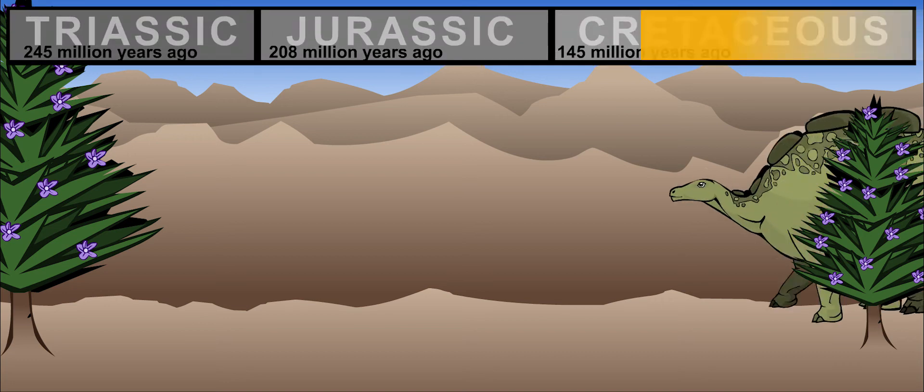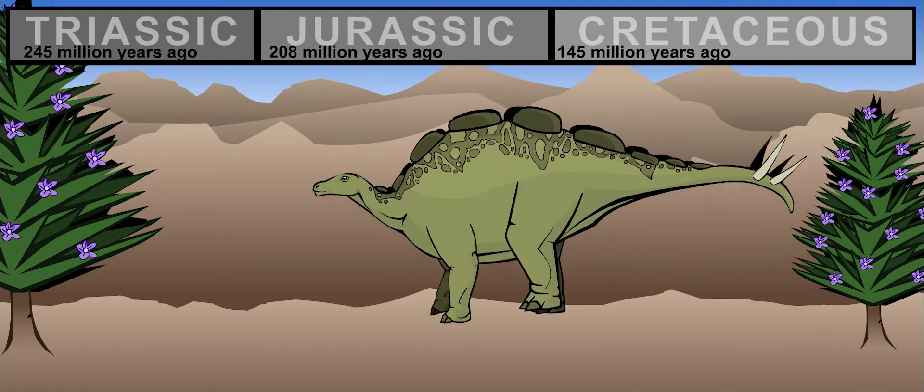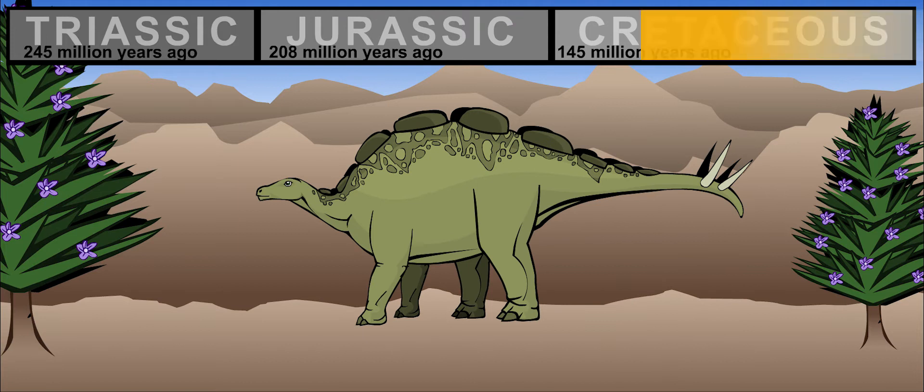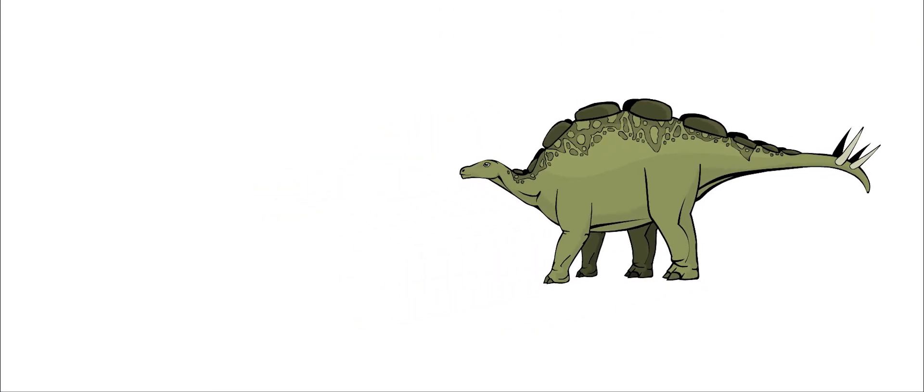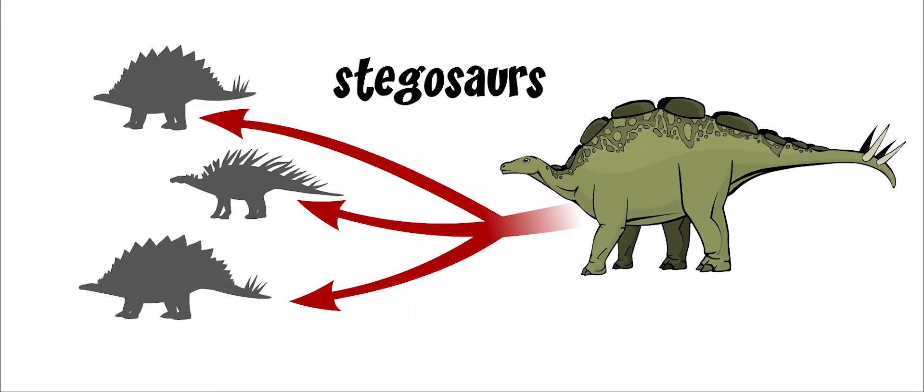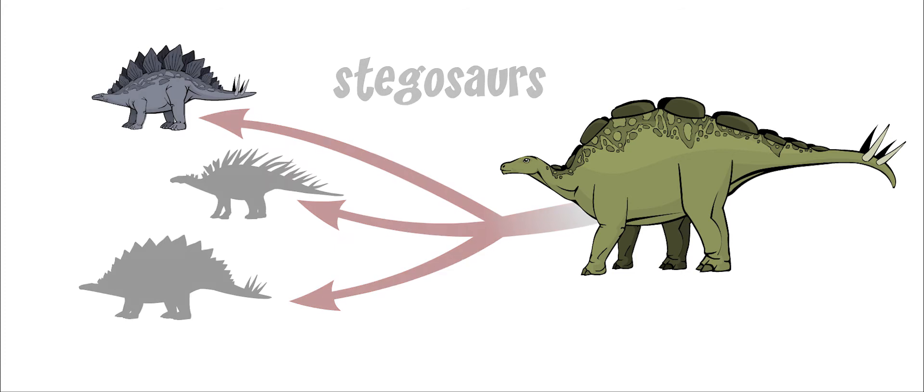Werosaurus lived about 135 million years ago. It was one of the last of a family of dinosaurs called the Stegosaurs. It was a close relative of Stegosaurus.